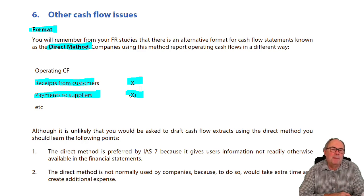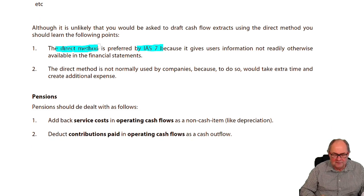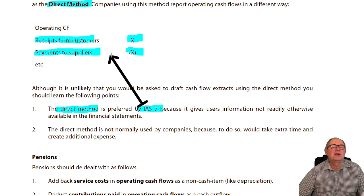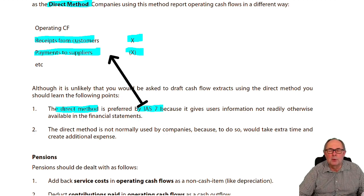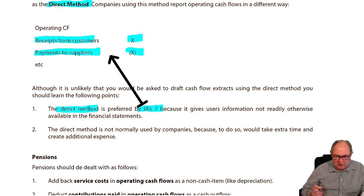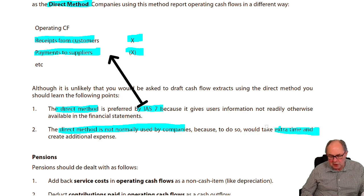The point is: which method is better? What you need to know is these two points. IAS 7 prefers the direct method — of course it does. If you imagine one of your relatives, your uncle or auntie, who understands a bit about business but isn't an accountant, they would understand those blue words. So IAS 7 says please use the direct method. It's a preference, not a rule. And companies say this will take ages to sort out — it's just too time consuming. So the direct method is not used by most companies, because of the time and expense.